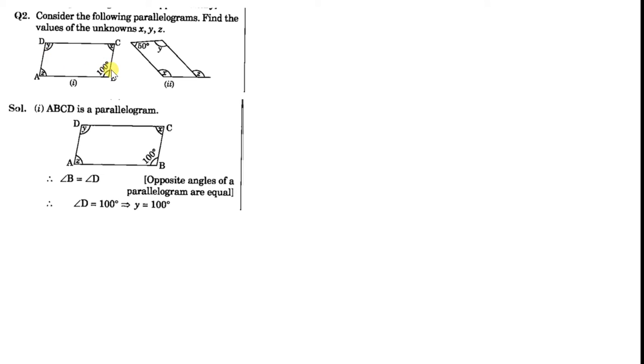So angle B will be equal to angle D, that is 100 degrees. So Y equals 100 degrees. And adjacent angles of a parallelogram are supplementary, so angle A plus angle B will be equal to 180 degrees. So Z plus 100 equals 180 degrees. So we can find Z as 180 minus 100, that is 80 degrees. And again we apply the same property that opposite angles of a parallelogram are equal. So angle C equals angle A, that is X equals Z, that is X is also equal to 80 degrees.